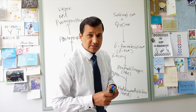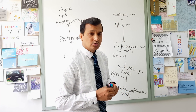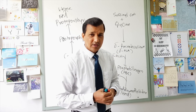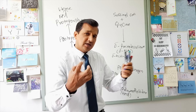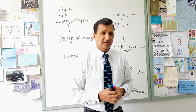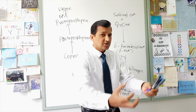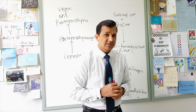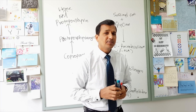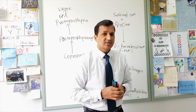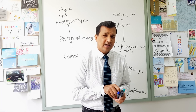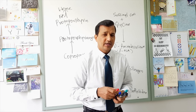Succinyl CoA is going to condense with a glycine molecule to make delta-aminolevulinate (ALA). Once succinyl CoA is pulled out of the TCA cycle, there will be a gap in the TCA cycle. The gap created in the TCA cycle can be filled by reactions called anaplerotic reactions.